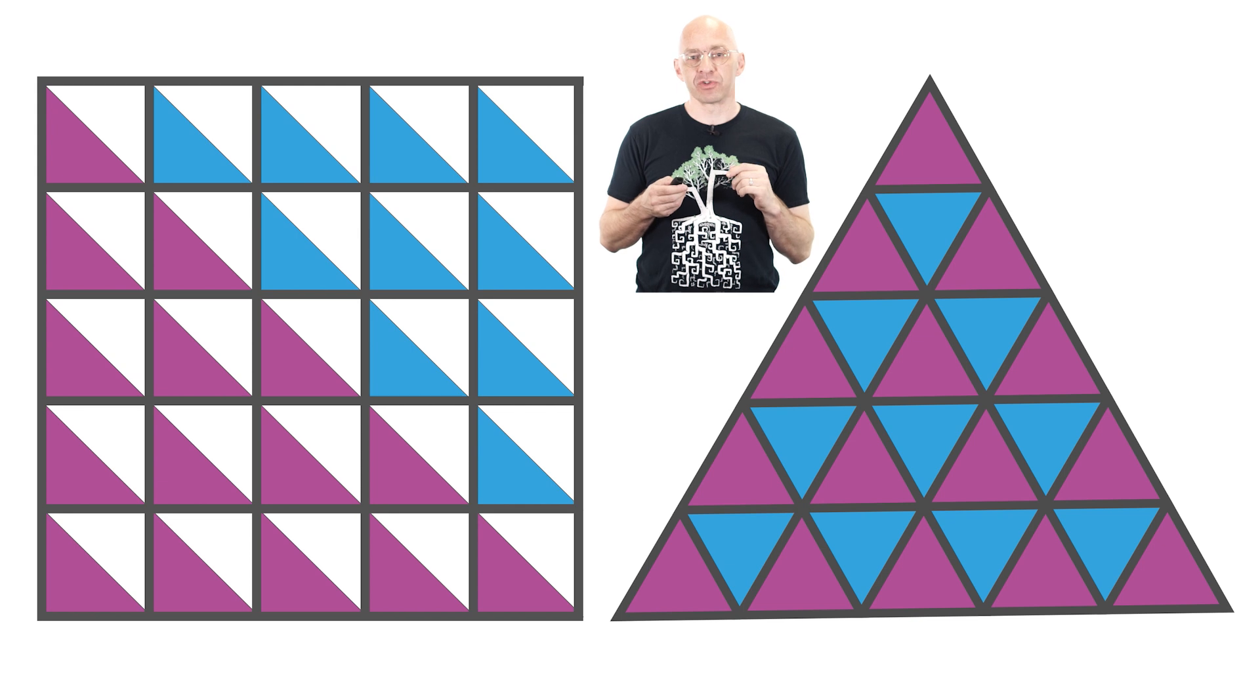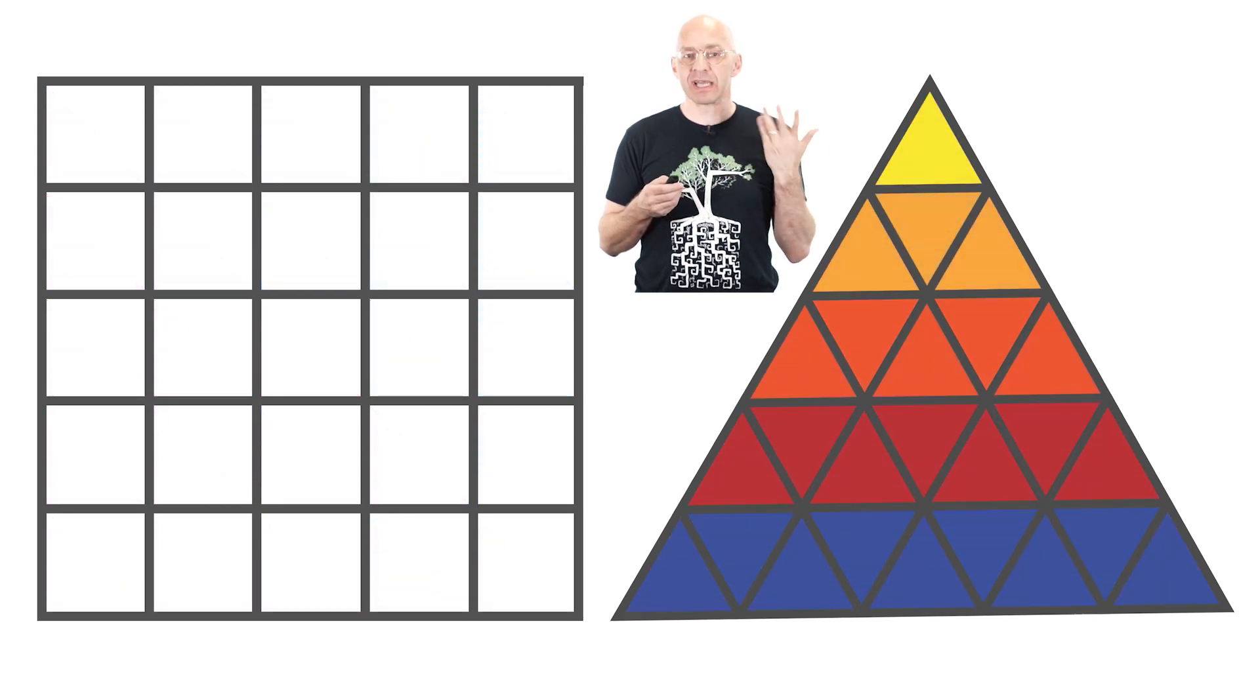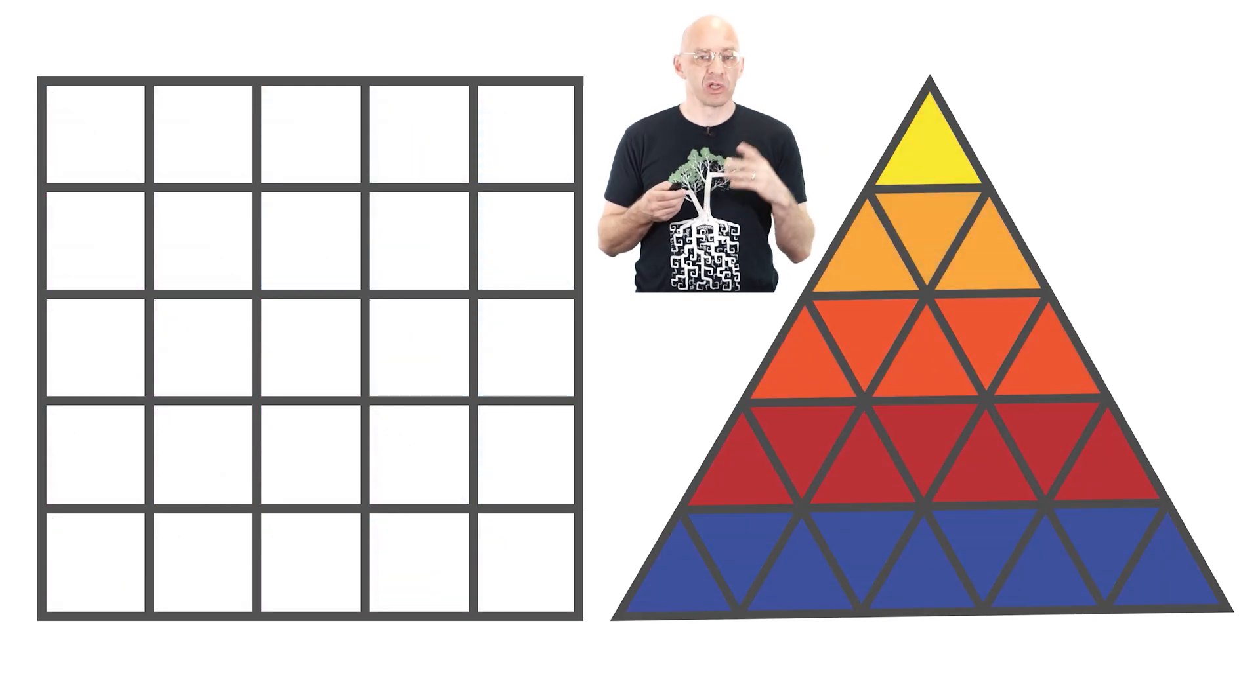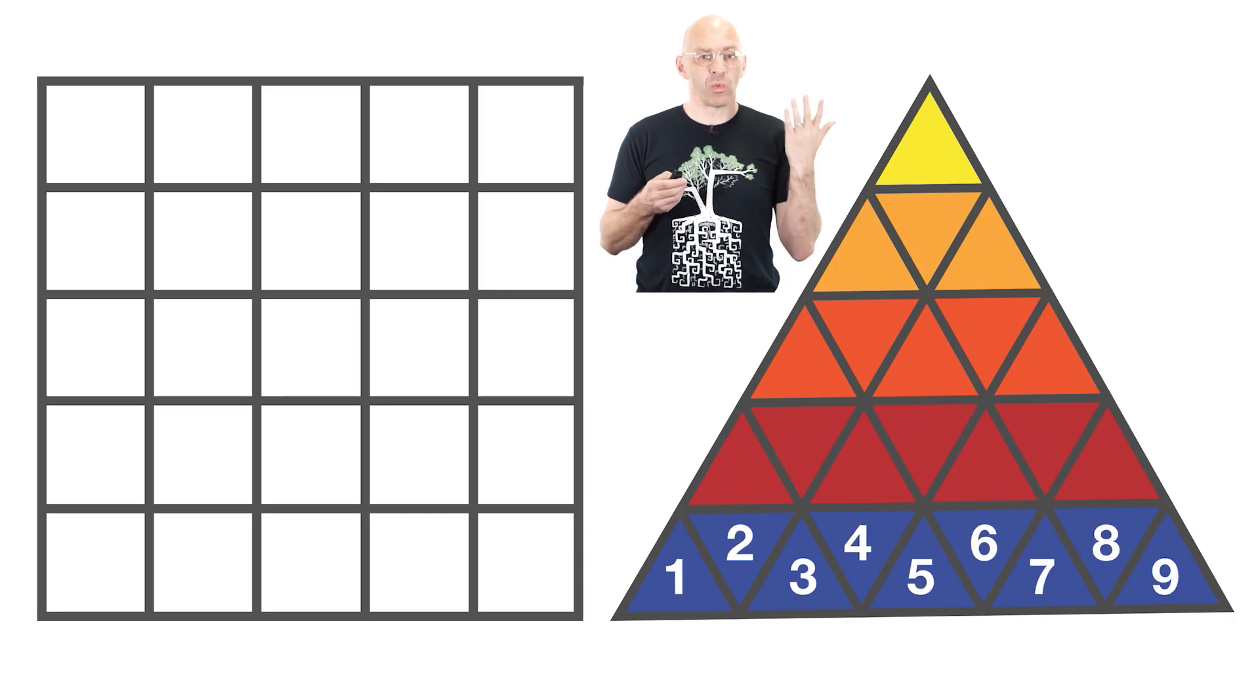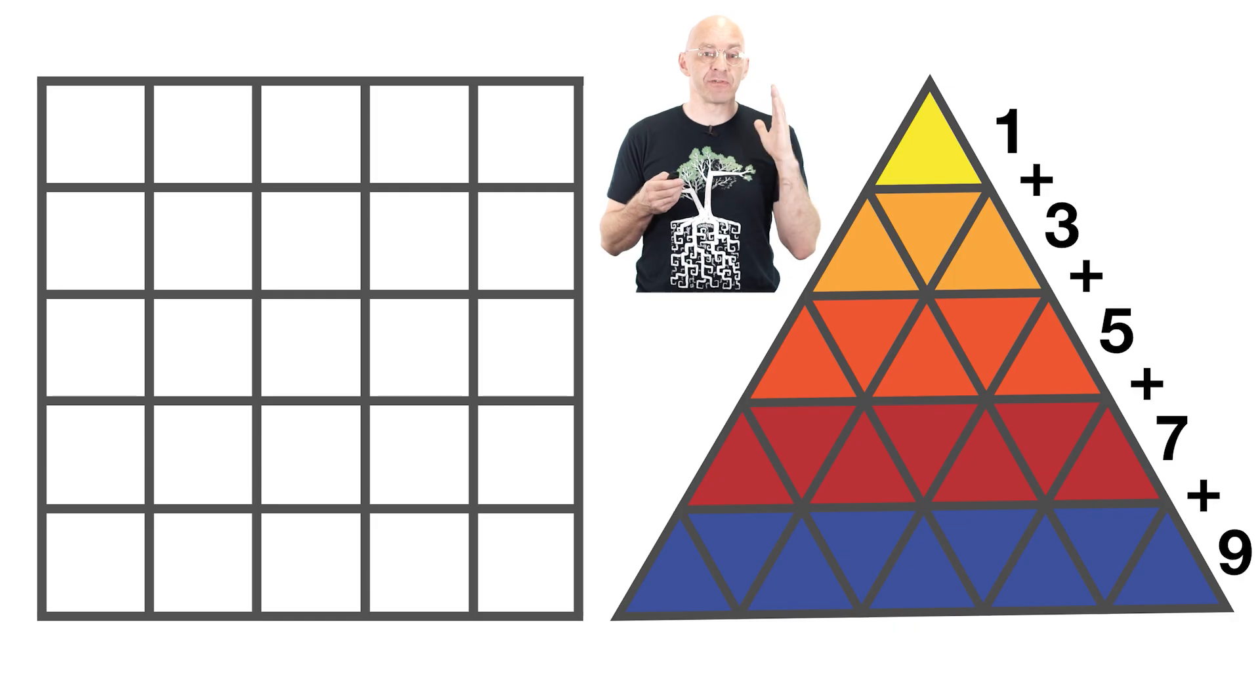Note that the layers of a triangular square are consecutive odd numbers. So one yellow triangle in the first layer, three orange in the second layer, then 5, 7 and 9. And so 1 plus 3 plus 5 plus 7 plus 9, the sum of the first 5 odd numbers is 5 squared.